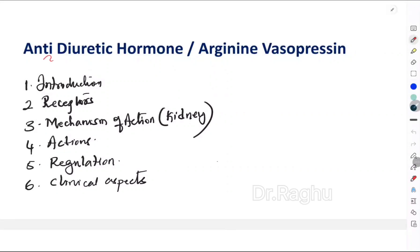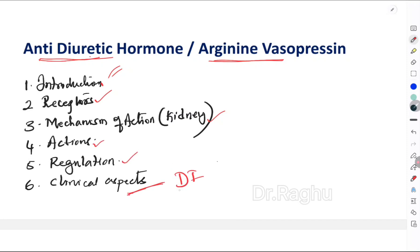In this video, let's understand the hormone secreted from the posterior pituitary, which is called the anti-diuretic hormone, and is also called arginine vasopressin. We will cover a brief introduction, the receptors it acts on, its mechanism of action — which is commonly asked in examinations — its actions, regulation, and the very important clinical topic of diabetes insipidus.